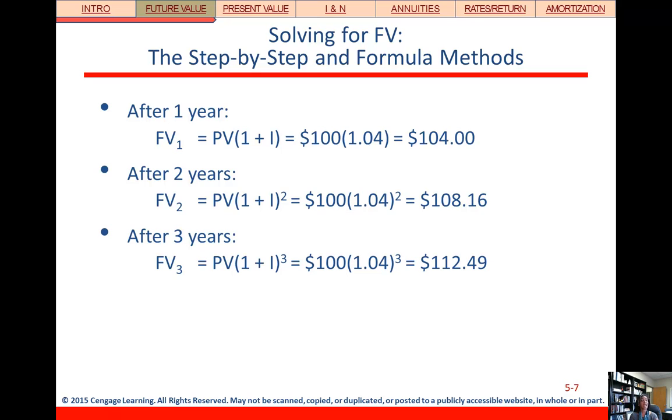Same thing for three years. Now our exponent is going to be a three because it's a three-year investment. So we'll have $112.49. So what this illustration tells us is that our general formula then is going to be that the future value after n years is going to be the present value times 1 plus the interest rate raised to the nth power.